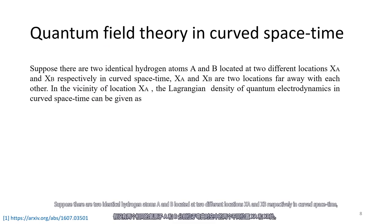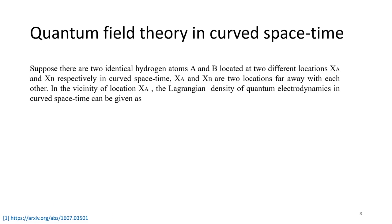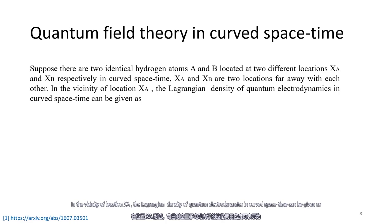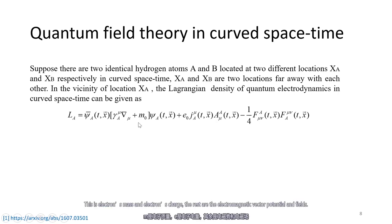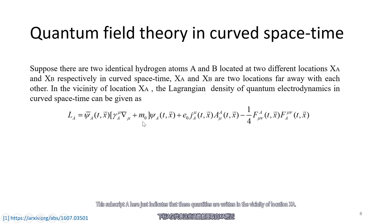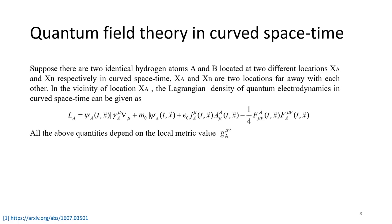Suppose there are two identical hydrogen atoms A and B, located at two different locations XA and XB respectively in curved spacetime. XA and XB are two locations far away from each other. In the vicinity of location XA, the Lagrangian density of quantum electrodynamics in curved spacetime can be given by this formula. This includes the Dirac field, the Dirac matrix, and the covariant derivative. The subscript A here indicates that these quantities are written in the vicinity of location XA.